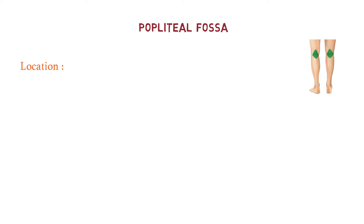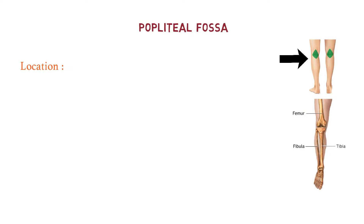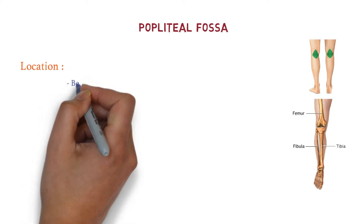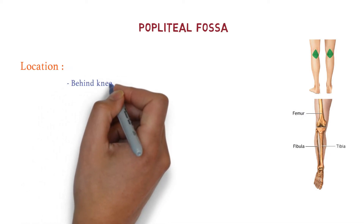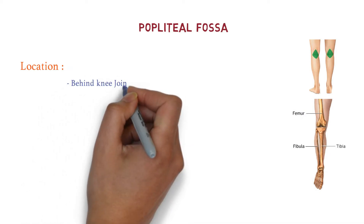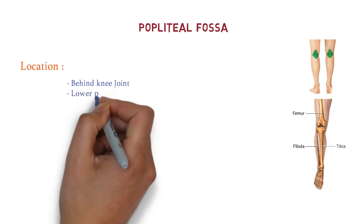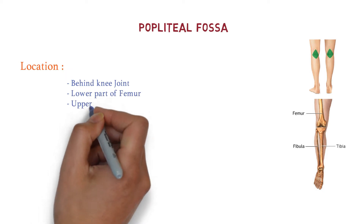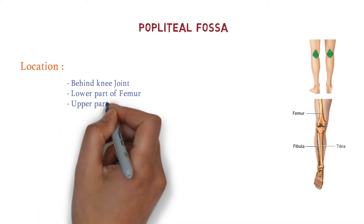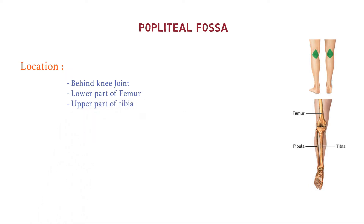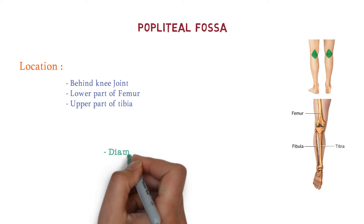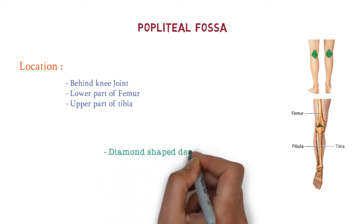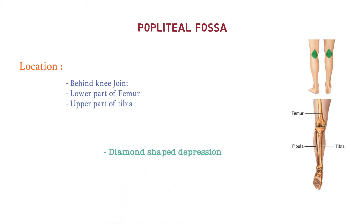So what is the location of Popliteal Fossa? Look over here — this is the green portion, just behind the knee joint. So it is located just behind the knee joint, lower part of femur and upper part of tibia, just behind the knee joint. This is the location of Popliteal Fossa, and this is a diamond-shaped depression.